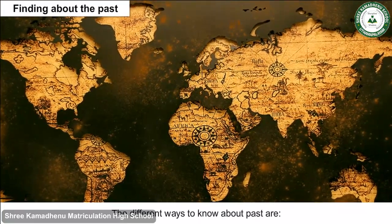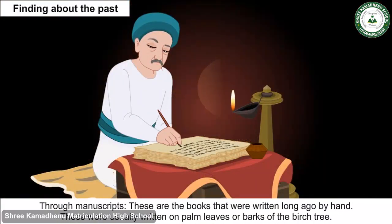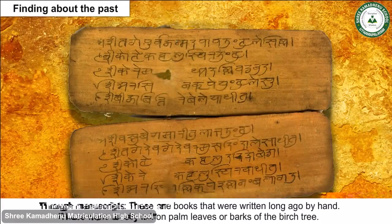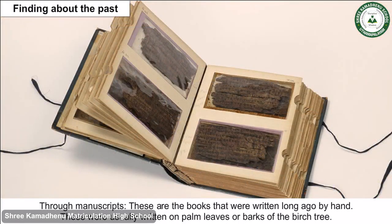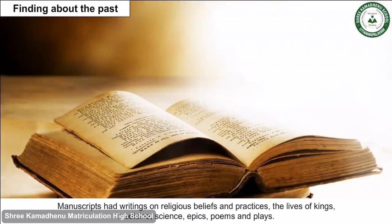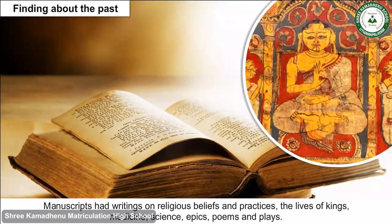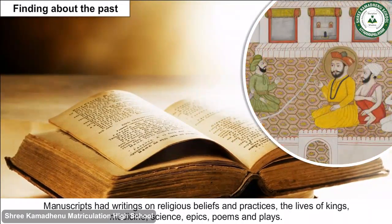Finding about the past: One way to know about the past is through manuscripts. These are books that were written long ago by hand, usually written on palm leaves or barks of the birch tree. Manuscripts contained writing on religious beliefs and practices, the life of kings, medicines, signs, epics, poems and plays.